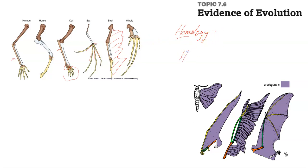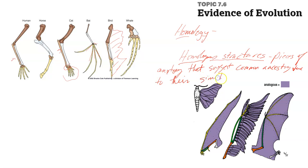So this is homology, or sometimes referred to as homologous structures. These are pieces of anatomy that suggest a common ancestor, just common ancestry, due to their similarity.